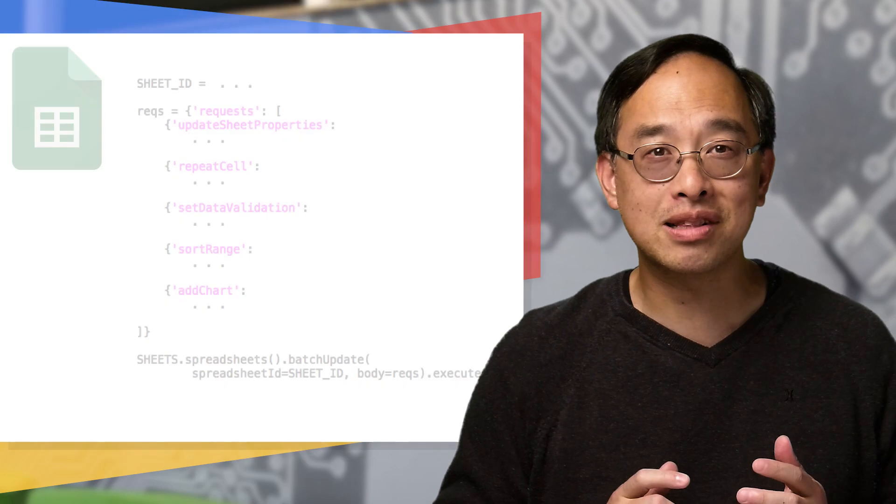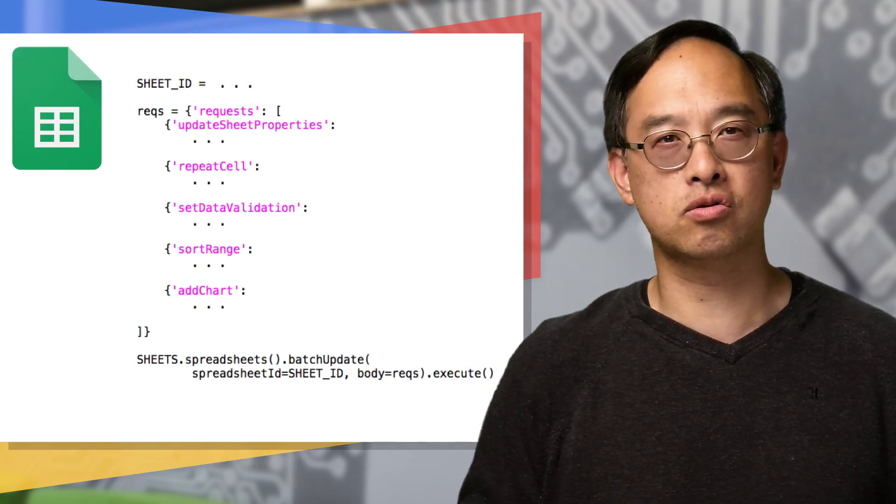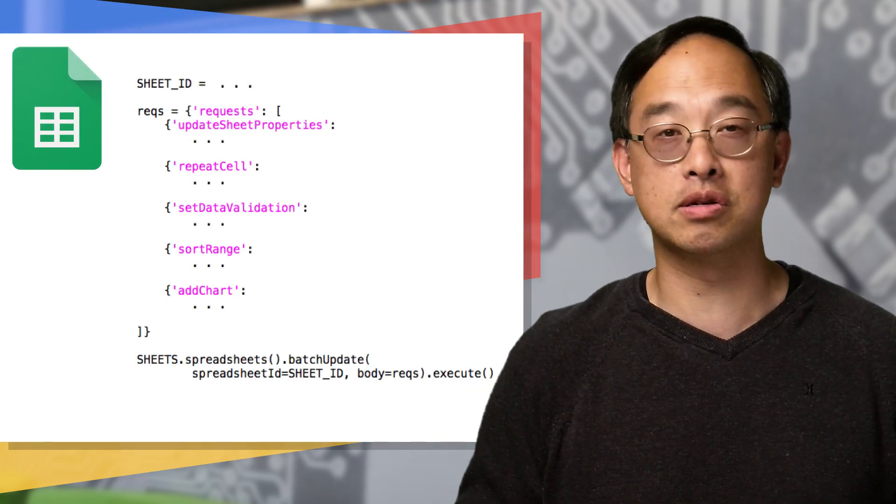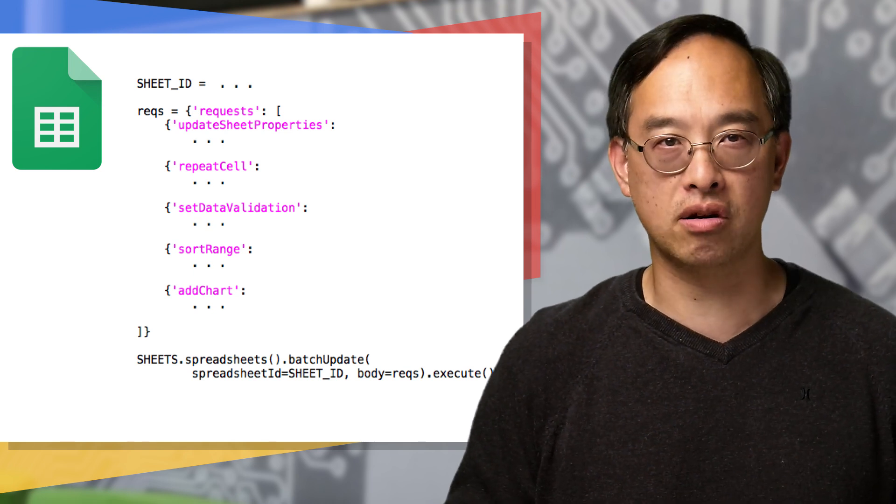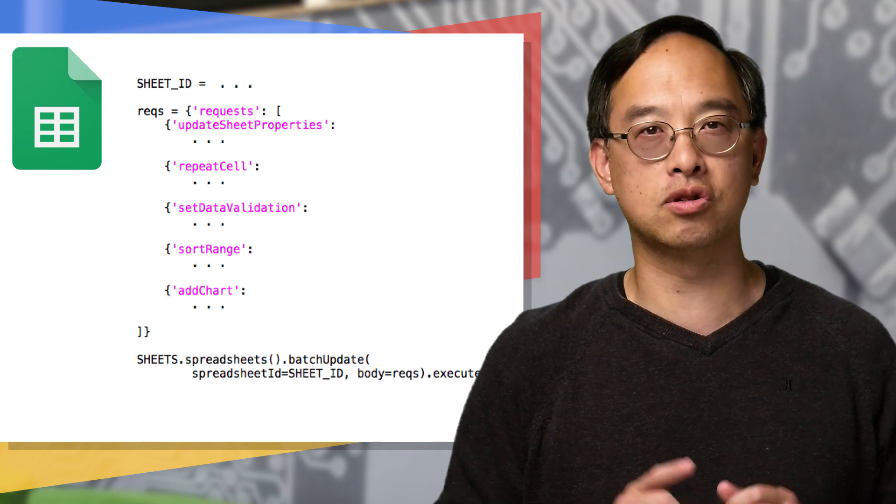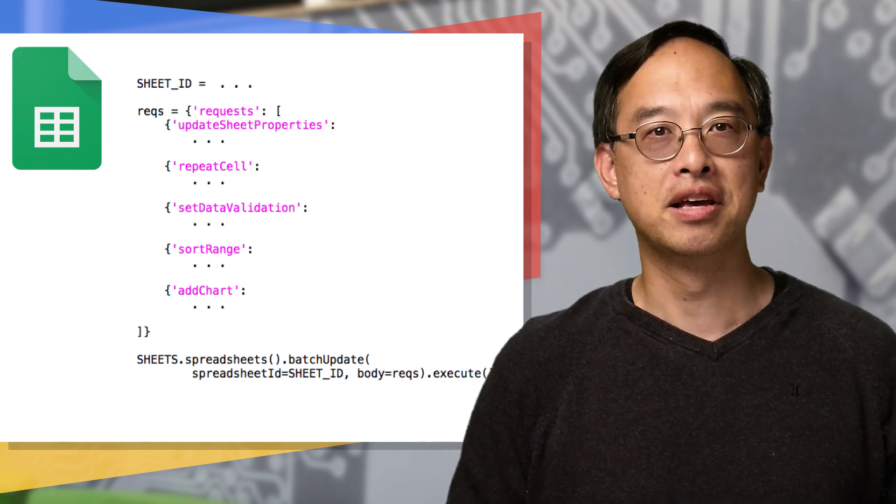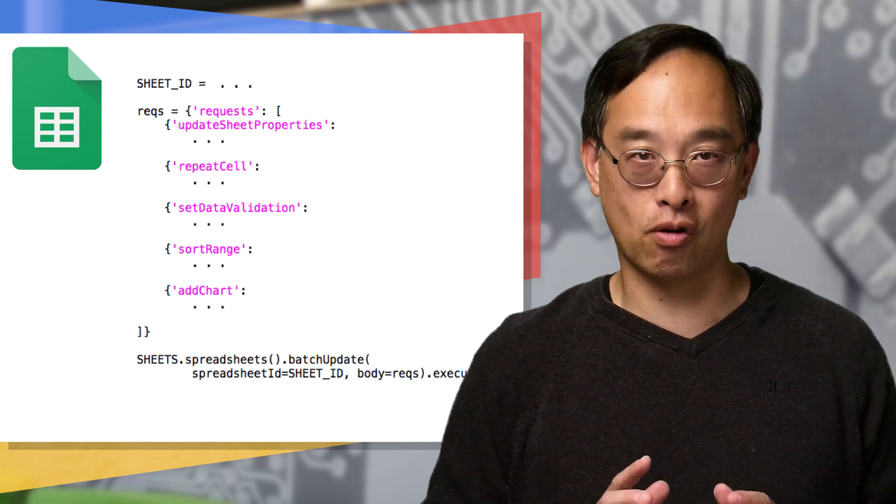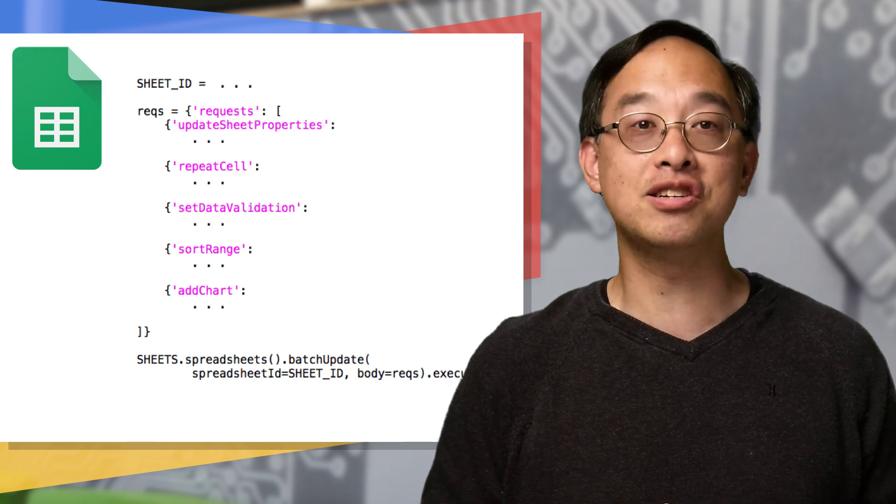What do those commands look like? Well, each request is a JSON structure represented here in this pseudocode as a Python dictionary. You can group as many of them as desired into an array like a Python list and send them together in one API call to spreadsheets.batchupdate. Let's look at each of the four requests for our sheet now, but more generically in JavaScript.